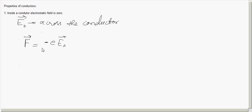The force on the electrons is in a direction opposite to E₀. Due to this force, the electrons move opposite to E₀ and accumulate on one side of the conductor, making that side negatively charged. The positive charges accumulate on the other side, making it positively charged. As a result, an electric field sets up inside the conductor.